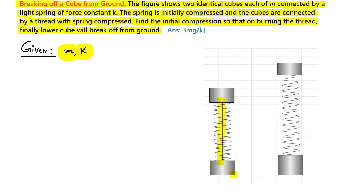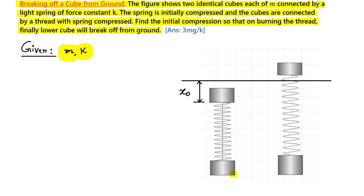Let's say the natural length of the spring is at some reference position. From that natural length, the spring is initially compressed by an amount x naught. We need to find x naught such that the lower block just leaves off — meaning it leaves with a velocity of zero, and the upper block also has zero velocity at that instant.